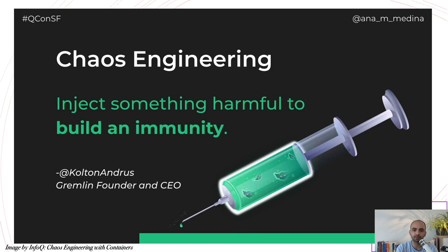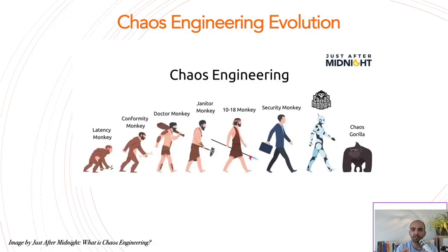In a nutshell, chaos engineering is like a vaccine — we are injecting something harmful into our production system to build immunity to real-world events. At Netflix, for example, they even kill one entire AWS region to make sure they are working fine. Regarding the evolution of chaos engineering, it all started with Netflix around 2009–2010 with Chaos Monkey — a very simple system that went into the infrastructure and killed instances randomly. Netflix then released that code for everyone to use.